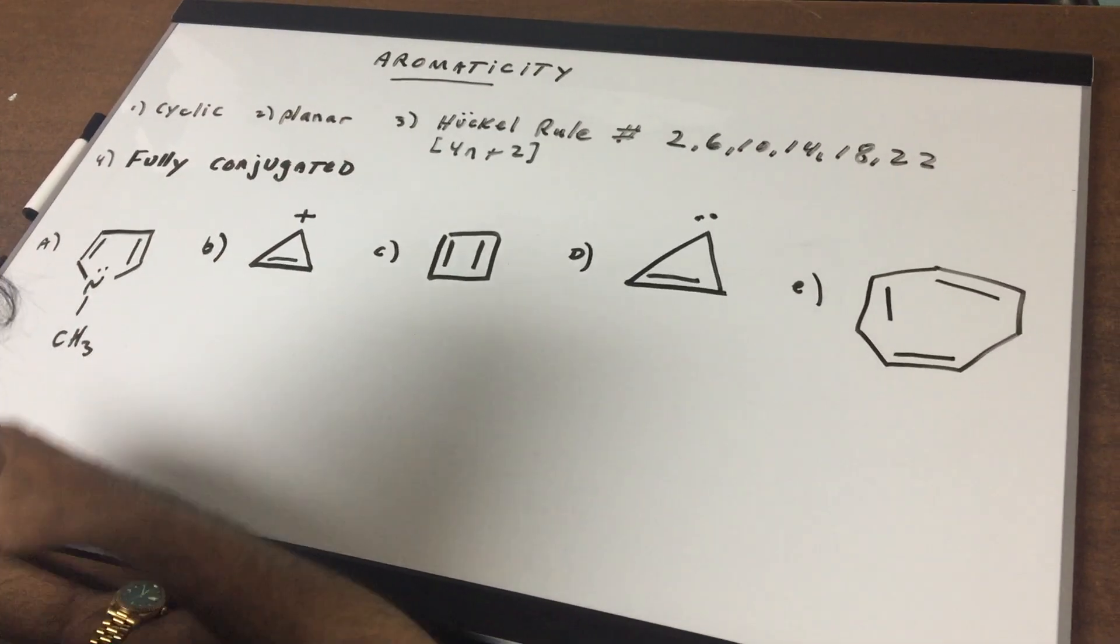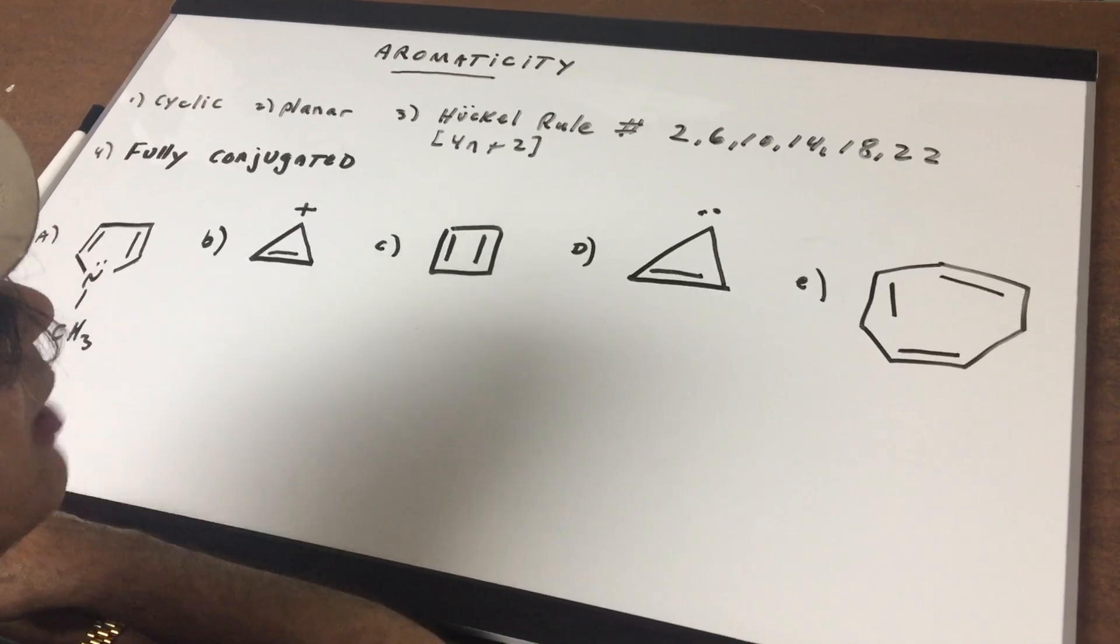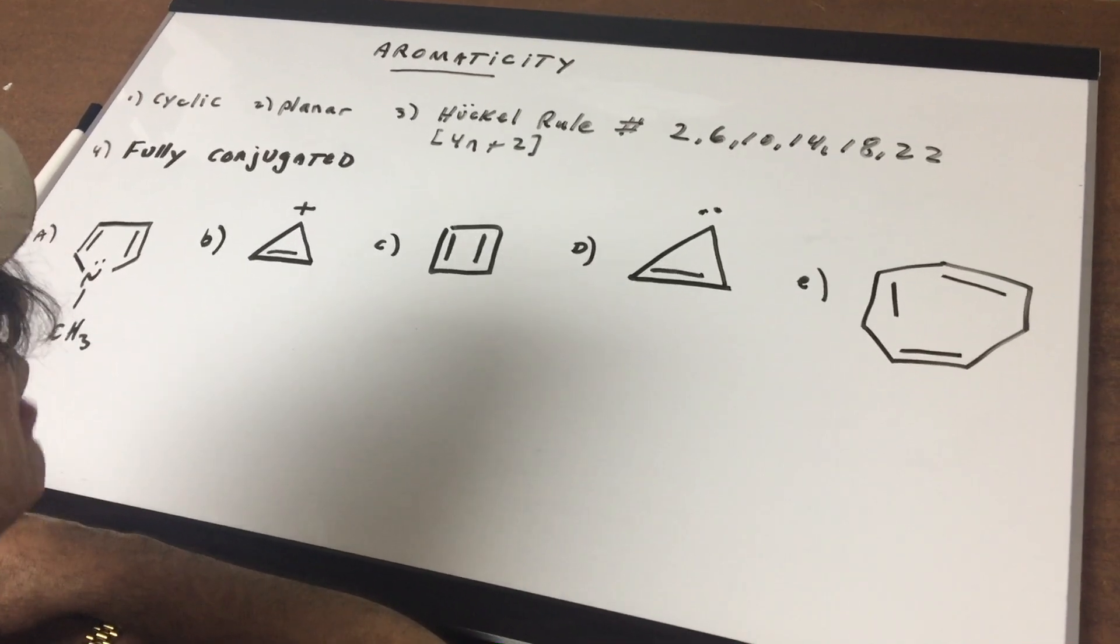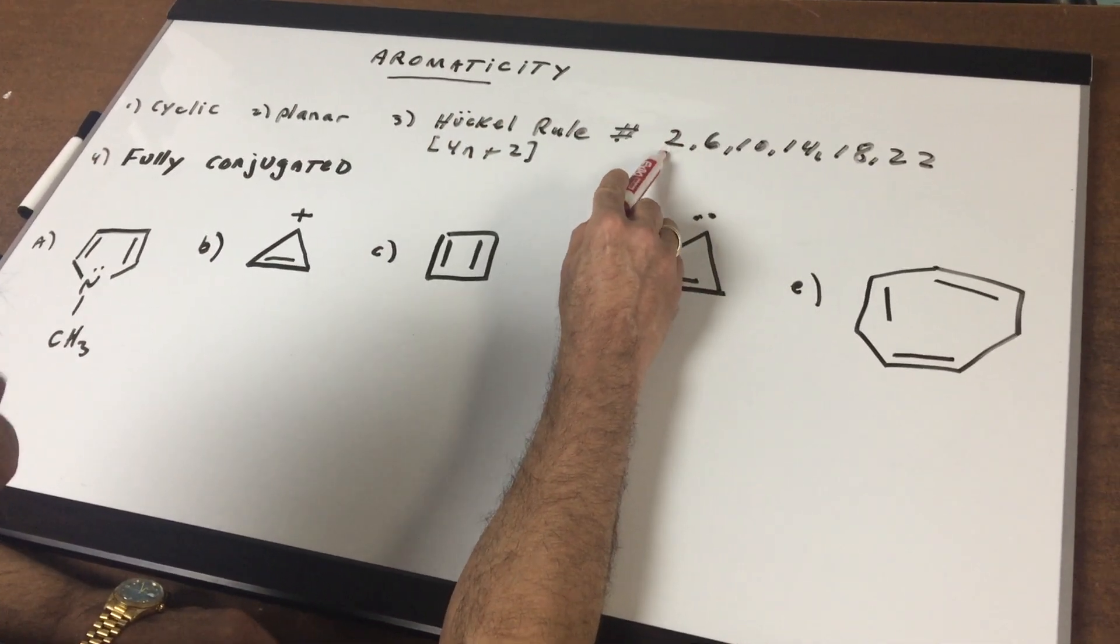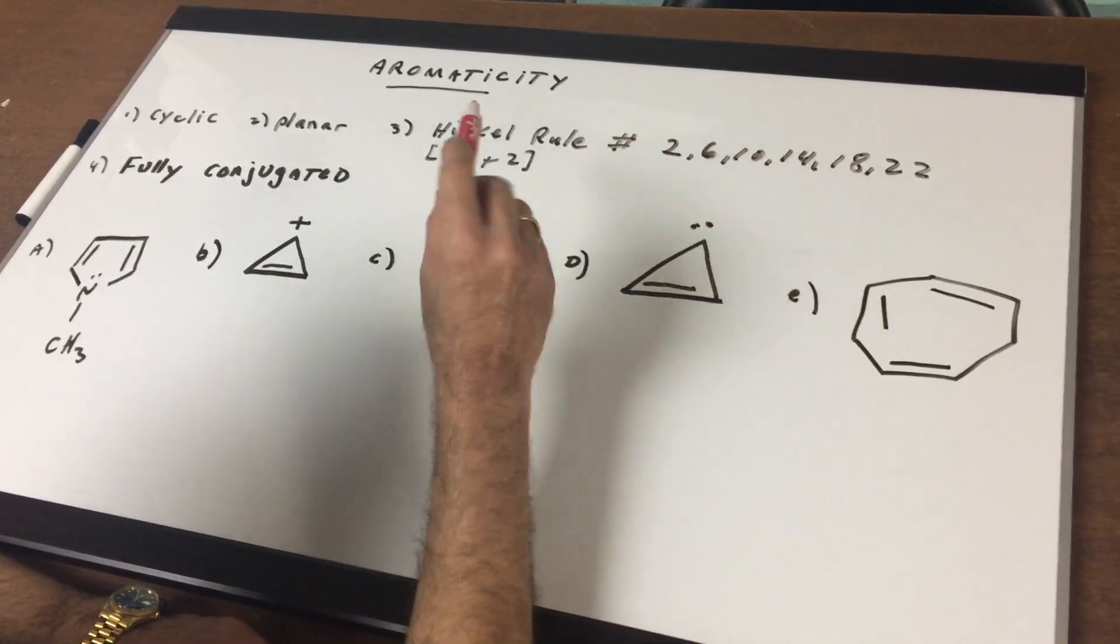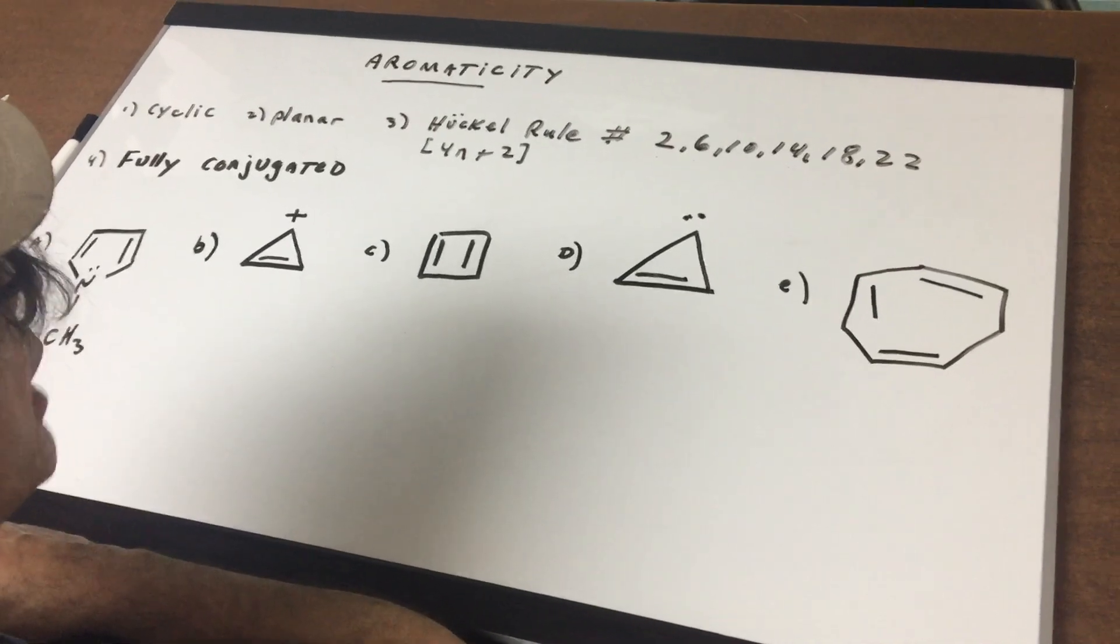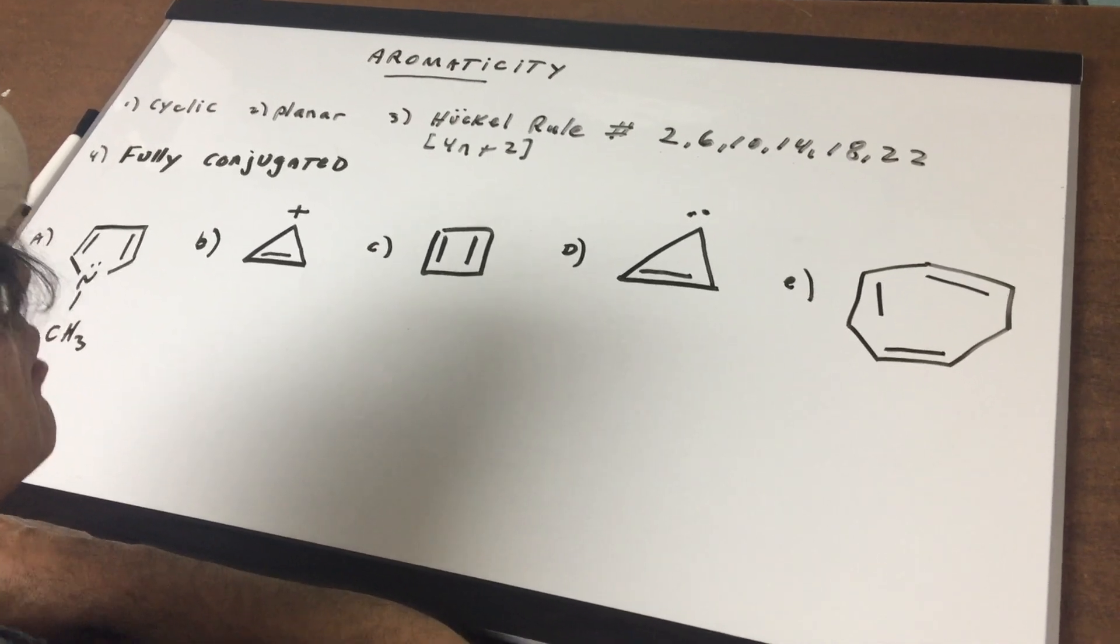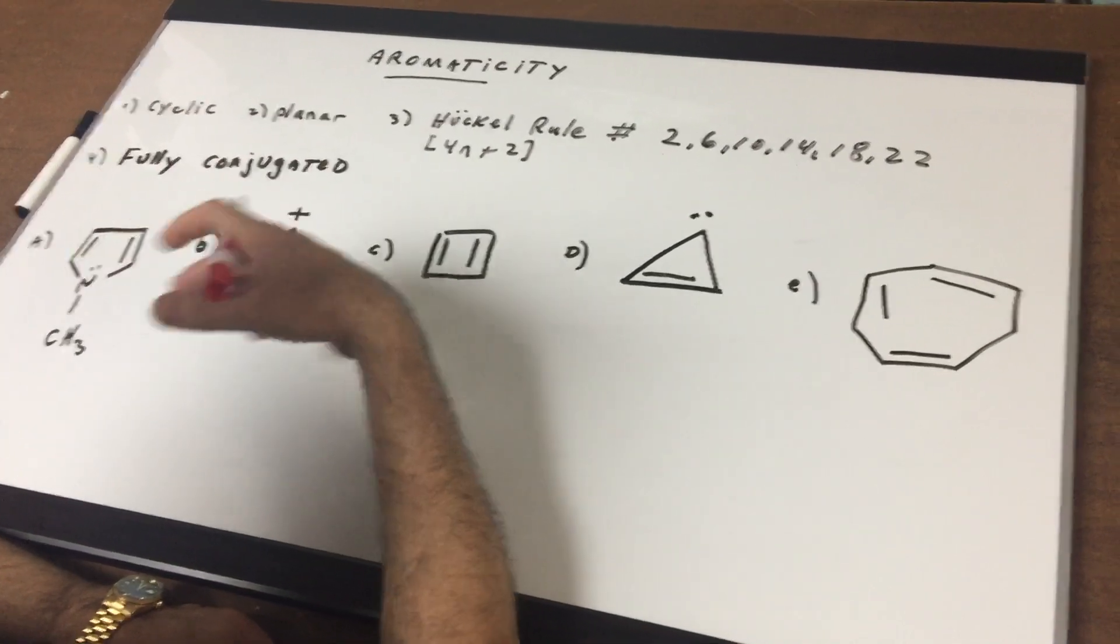The next thing is there must be a certain number of electrons, pi electrons associated with this molecule. And those numbers are 2, 6, 10, 14, 18 and 22. Beyond 22, it begins to break down. But if a molecule had those pi electrons, you would say that it conformed to what we call Huckel's rule.